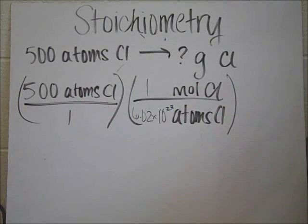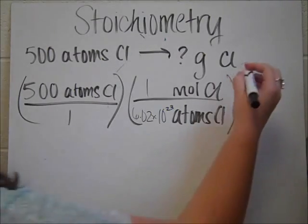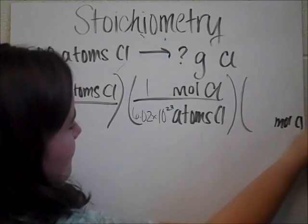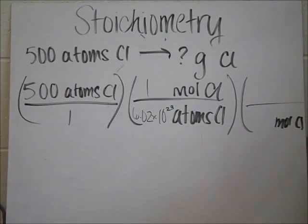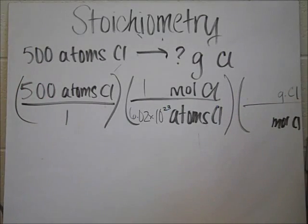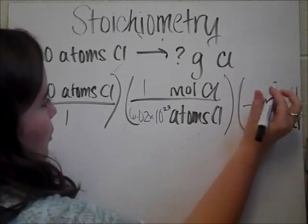And then in our final step, what we want to get is grams. So in order to cancel out moles, we'll put moles on the bottom, and we want to get grams on the top. So in order to get to grams, we're going to get 1 mole of chlorine. And then we're going to say that it equals the molar mass that you found on the periodic table, which is 35.45.